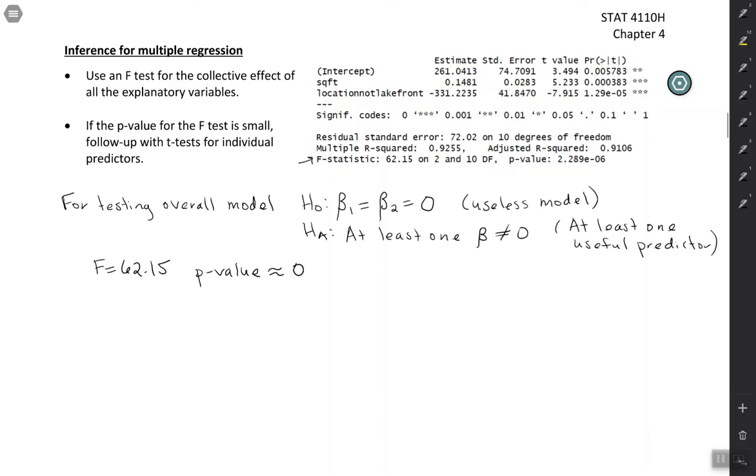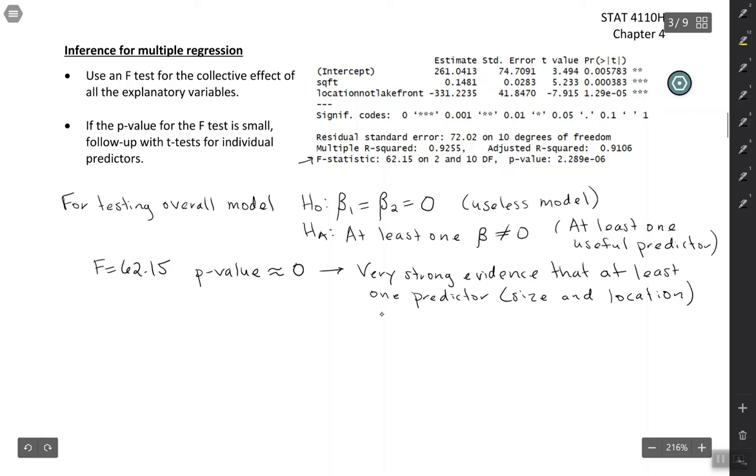So because our p-value is so small, that means that we have very strong evidence that at least one of our predictors is useful. Very strong evidence that at least one predictor, and in this case, our two predictors are size and location, at least one predictor is useful.